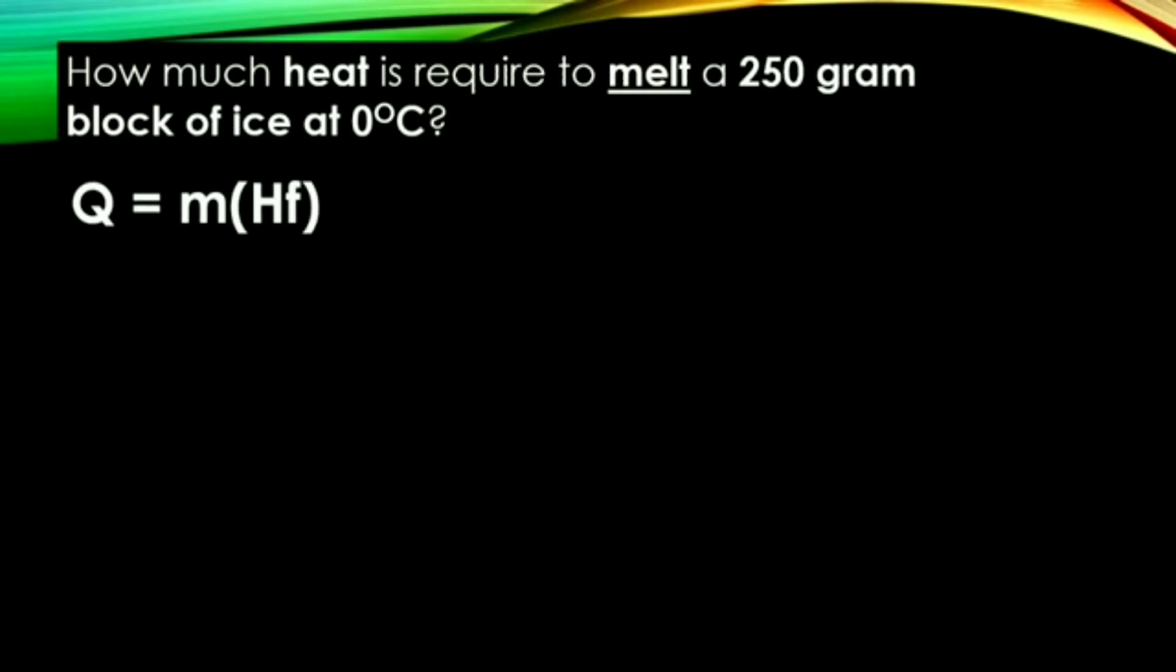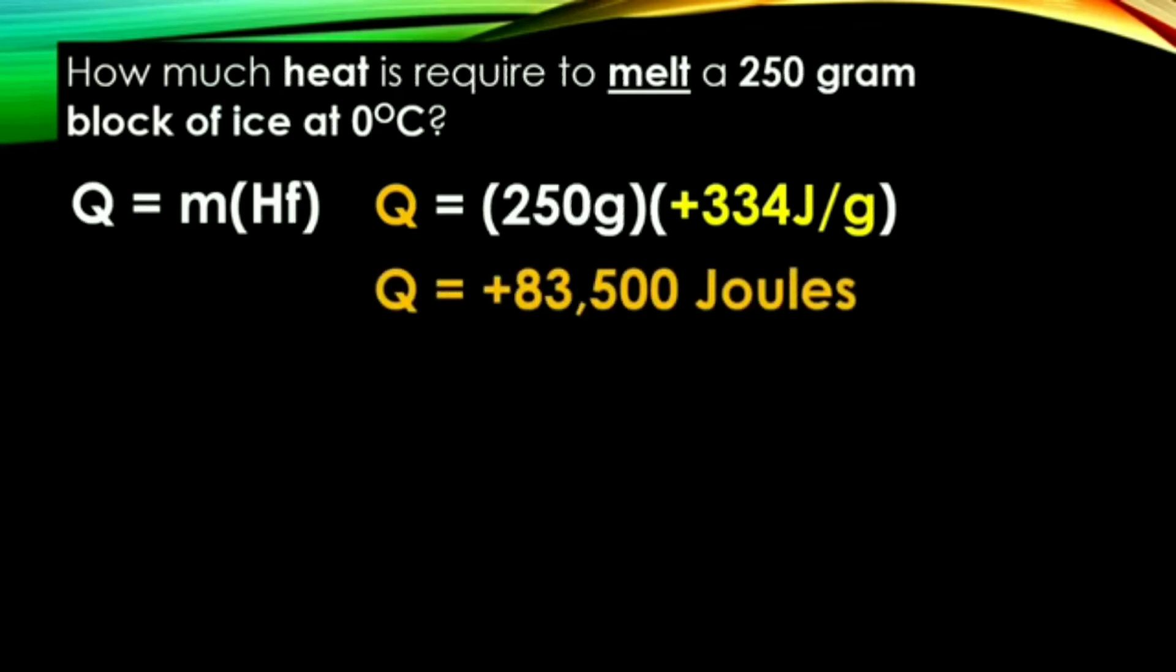Now it is time to try one more. How much heat is needed to melt? See the keyword melt? 250 gram block of ice at zero degrees Celsius. Remember, zero degrees Celsius is also a keyword. When we substitute into this question and solve, we are going to find that we will produce 83,500 joules of heat. So the amount of heat absorbed is 83,500.